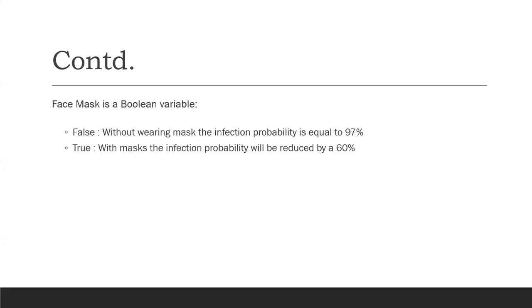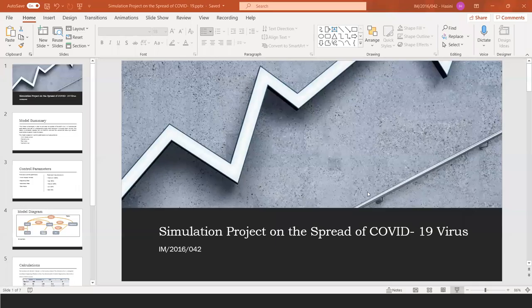The face mask is a Boolean variable. Without wearing the face mask, the infection probability is equal to 97%. By wearing the face mask, the infection probability will be reduced by 60%.